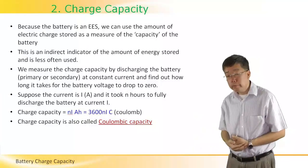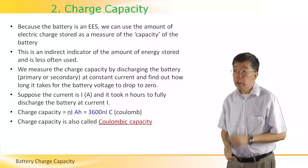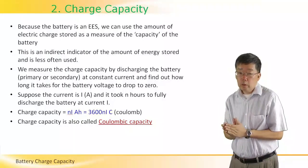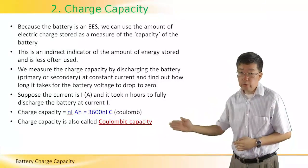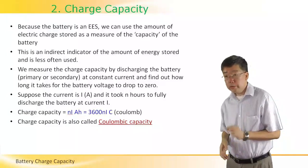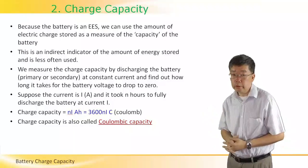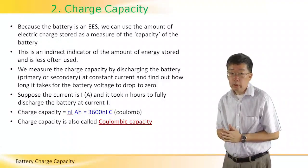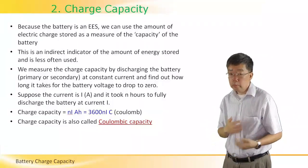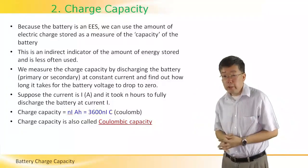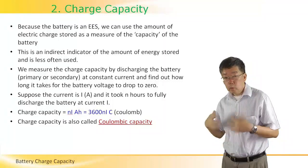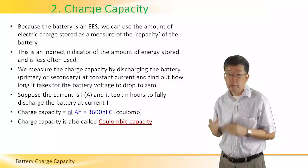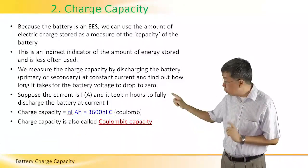The way we measure the charge capacity is to discharge the battery — whether primary or secondary — at a constant current. By constant current, we mean the electrons are being discharged from the battery at a constant rate: a fixed number per second. All we have to do is measure how long it takes for the battery to become fully discharged, i.e., when VOC equals zero.